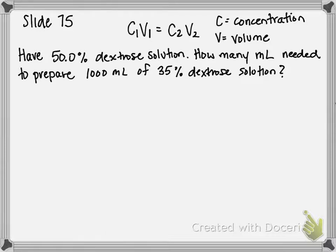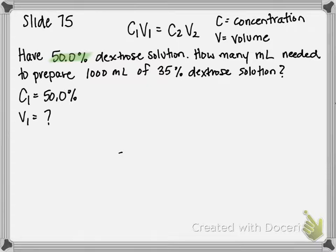First, I'm going to identify what variables from this equation I have. We are given an initial concentration, our C1, of 50%. We don't know the volume we want to use, so we're looking for V1. Our C2 is 35% dextrose solution, and our V2 is 1,000 milliliters.